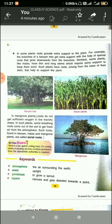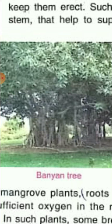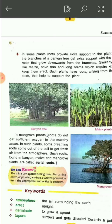Similarly, some plants like maize have a thin and long stem which requires extra support. These plants have roots arising from the base of their stem to help support the plant. We call these prop roots. Prop roots simply help the plant to grow well.